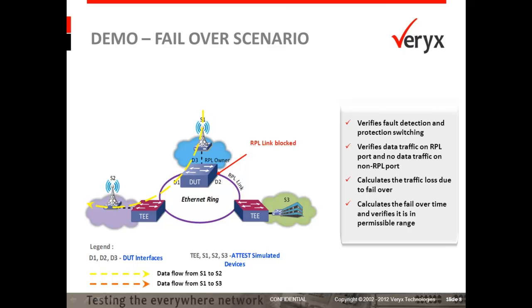This makes the received traffic flow from S1 to S2 and S1 to S3 via the non-ring protection link. Next, the ring protection link owner detects a local signal failure on its link and unblocks the ring protection link. ADDIST stops sending the periodic CCM messages to simulate this failure condition. The device under test detects this failure after the lapse of 3.5 times the CCM interval, then starts forwarding traffic flows from S1 to S2 and S1 to S3 on its ring protection link. ADDIST calculates the failover time and verifies whether it is within the permissible range.